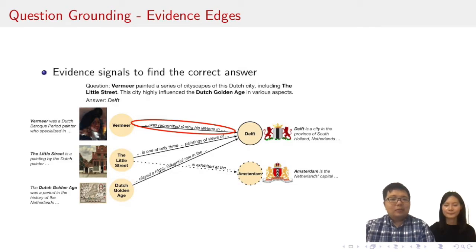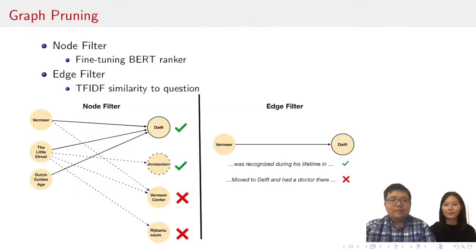Also, we need edges in the local knowledge graph. These are the evidence signals to find the correct answer. In this example, the edge between the node, the Little Street, and Delft, and the edge between the node Dutch Golden Age and Delft, are two evidences mentioned in the question. We extract the evidence edge directly from our free text knowledge graph. What if the question-related subgraph is still too big? If the subgraph is too big, it slows both training and inference. That's really a concern. We therefore prune the graph with a simple filter to remove weak, spurious nodes and improve the efficiency.